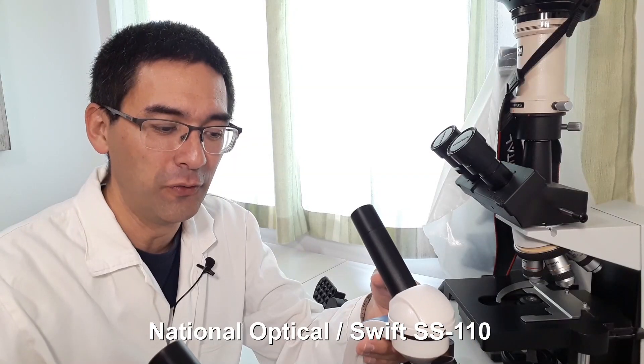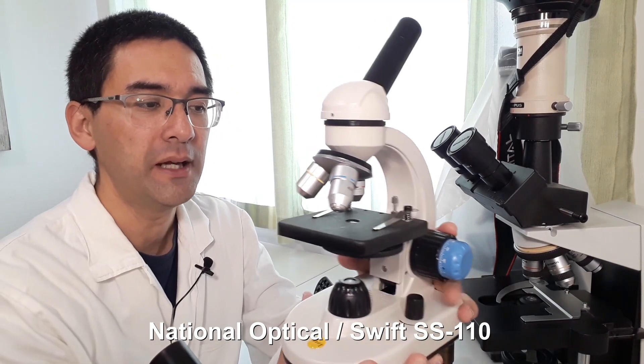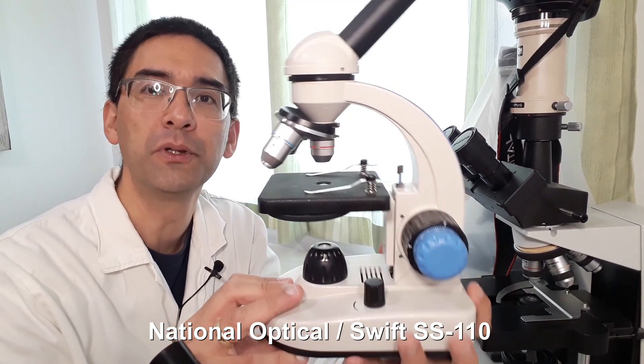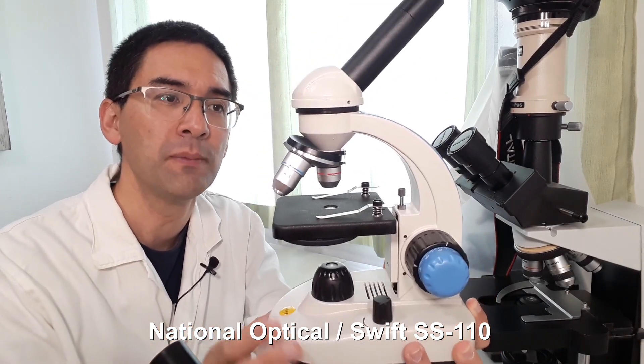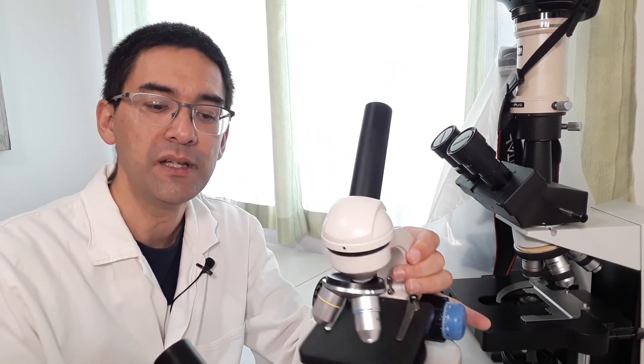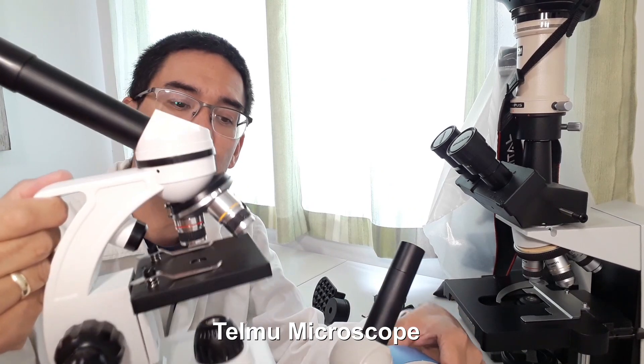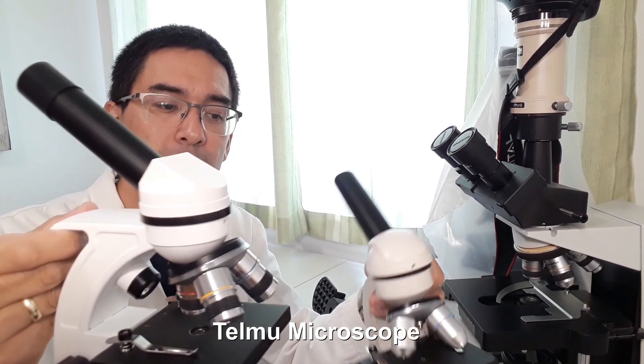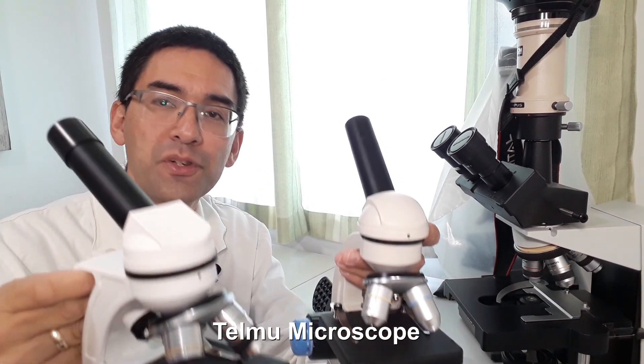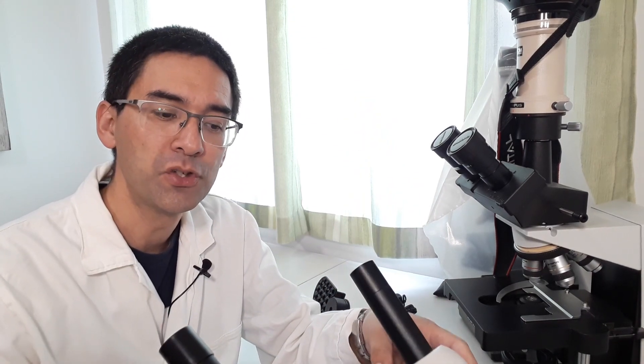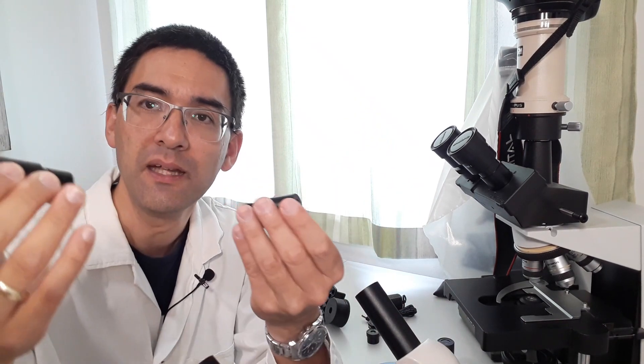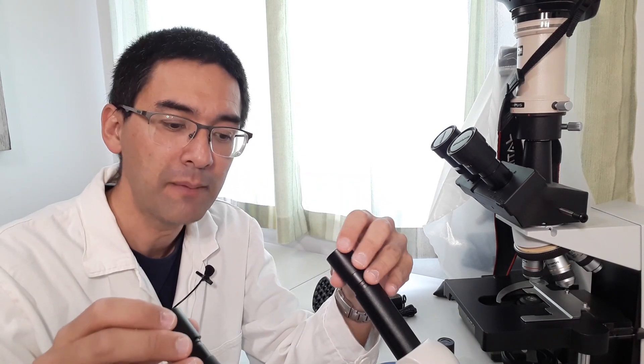First of all, the microscope here is one from National Optical or also from Swift. It's branded a little bit differently in different countries. And this one here is from Telmu. Both of them are similar in the sense that they have the same magnifications. Both are supplied with 10x eyepieces and also 25x eyepieces.